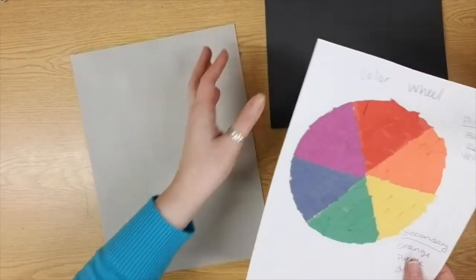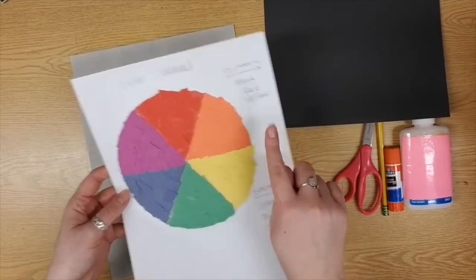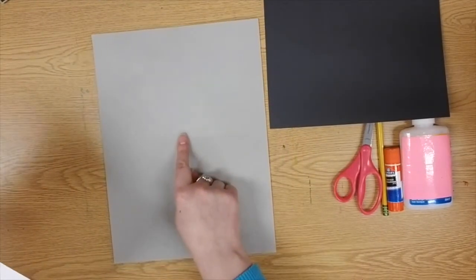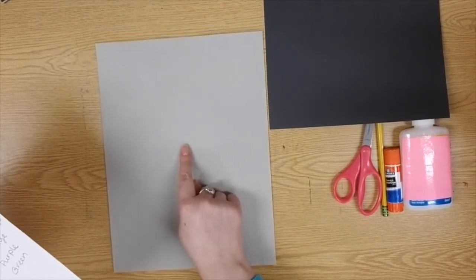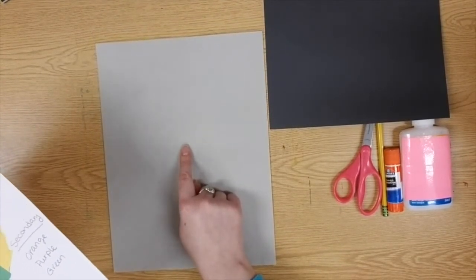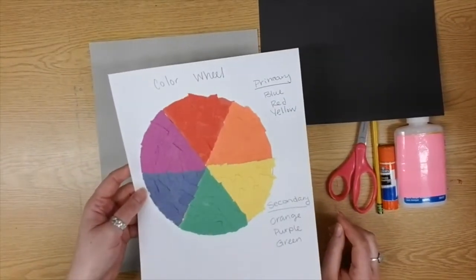So the first thing that I need to do is go ahead and cut my color wheel out so that way I can glue it into the middle of my gray piece of paper. I'm going to do both of these two steps rather quickly. Okay so that way you can see how it looks. Again you're cutting out your color wheel and then you're going to glue it to the middle of your gray piece of paper. Here I go.